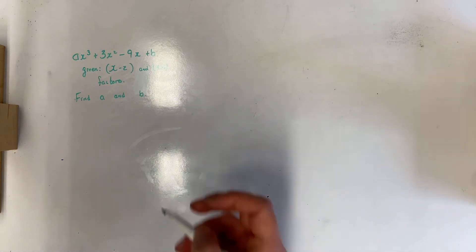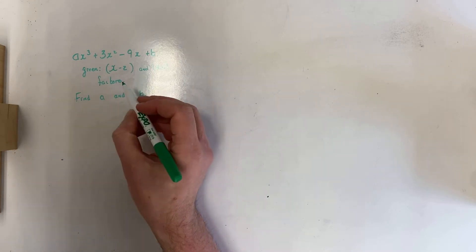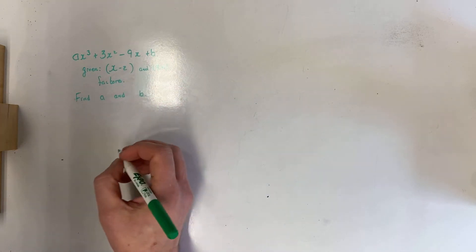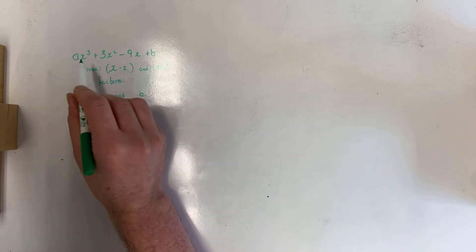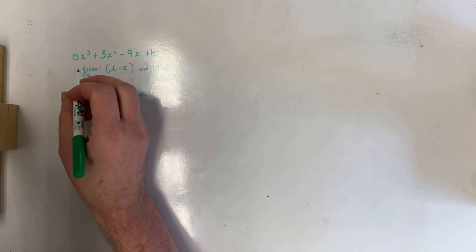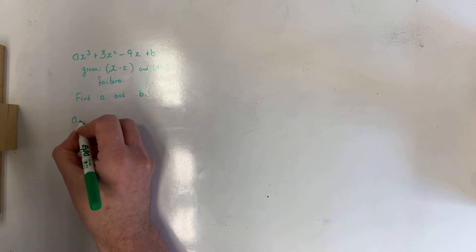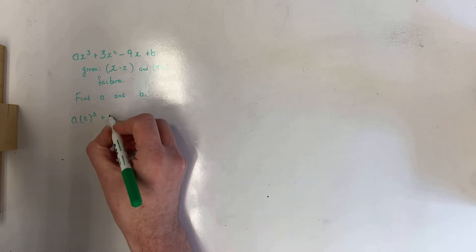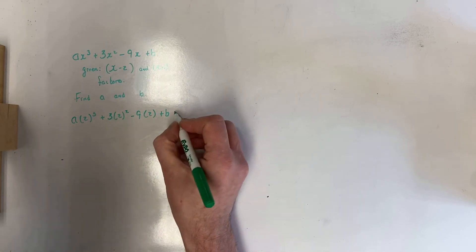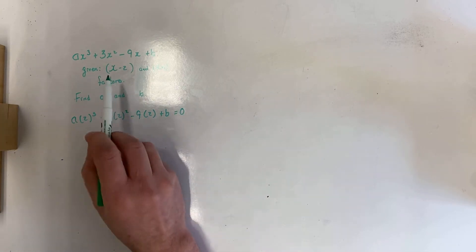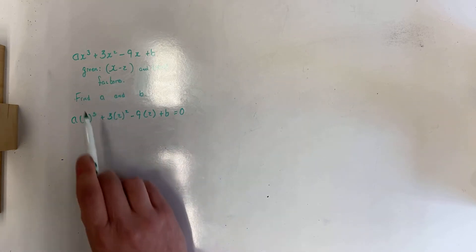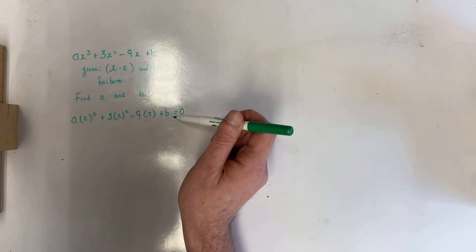Here's how I'm going to go about this. I know that x minus 2 is a factor. The factor theorem tells me that 2 will be a root or a solution of my polynomial. In other words, if I input a value of 2 in for x, then my polynomial will be equal to 0.